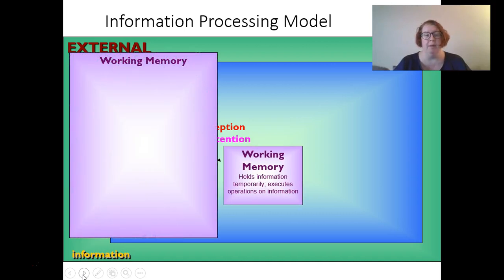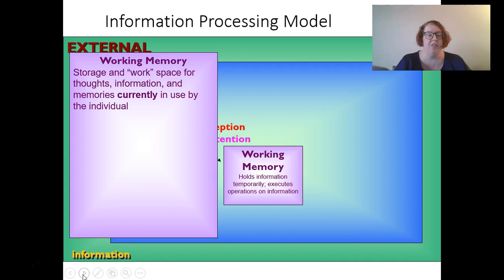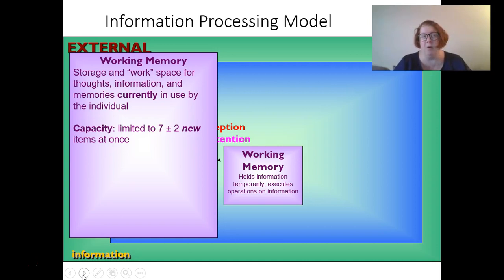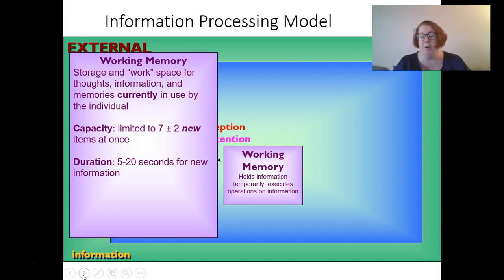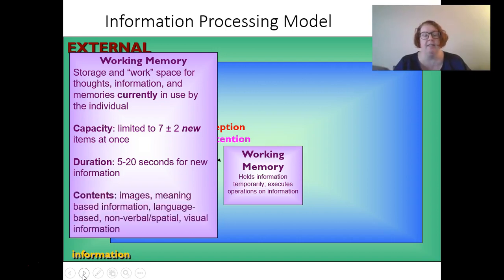Working memory is a storage and workspace for thoughts and information currently in use. Working memory is relatively small — around seven new items at once, plus or minus two, depending on your own personal individuality. It lasts between five to twenty seconds for new information, although you can make that longer by rehearsing. It can be images, meaning-based information, language-based, nonverbal or spatial, or visual. Lots of different things can constitute our working memory.